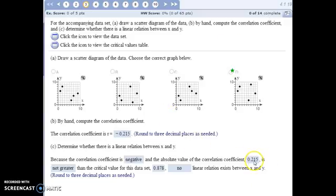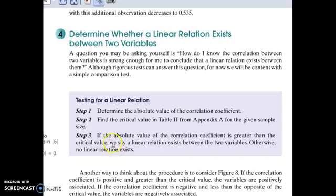And our value here is not greater than the critical value, so we determine that there is no linear relationship. If the absolute value of the correlation coefficient is greater, then we can say a linear relationship does exist between the two variables. Otherwise, we can't say no relationship exists, but we say that no linear relationship exists. They don't appear to follow a linear trend.